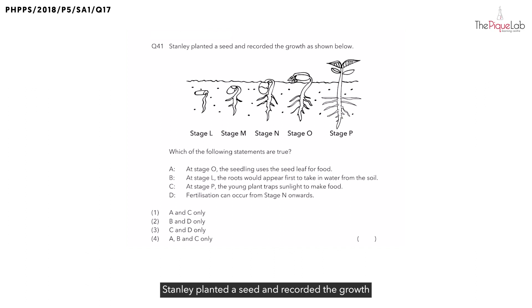Question 41. Stanley planted a seed and recorded the growth as shown below. So we have the picture showing us from stage L all the way to stage P. We are supposed to look for statements which are true.